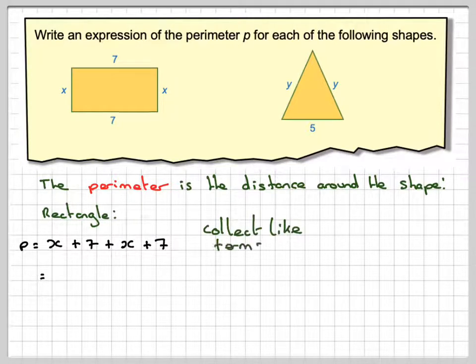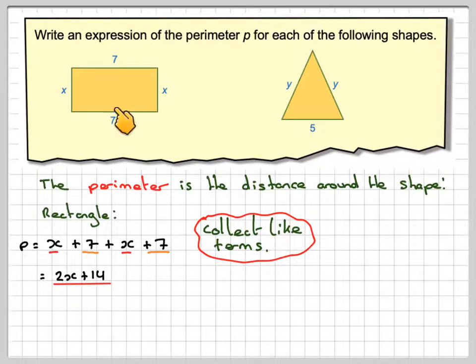Right, next thing is to group the like terms together. So here I've got an X plus an X, so we'll write 2X, and then I've got 7 plus 7, which makes 14. So the perimeter of this shape will be 2X plus 14.